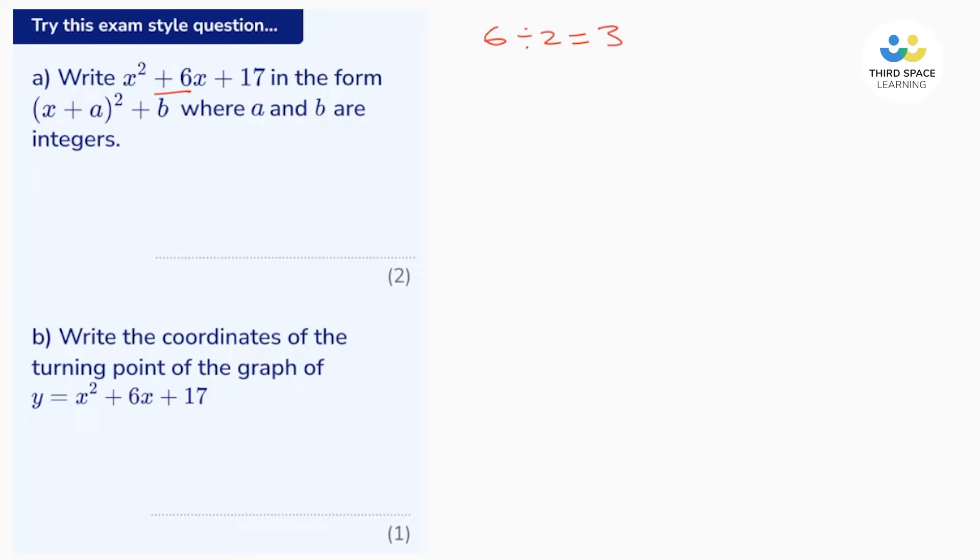That means that the closest perfect square is x in a bracket plus 3, and then the whole bracket is squared.